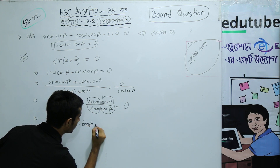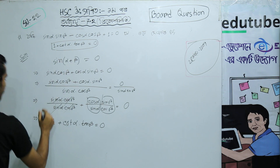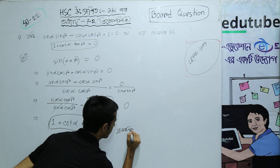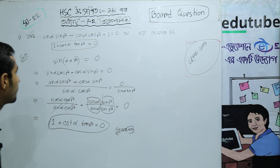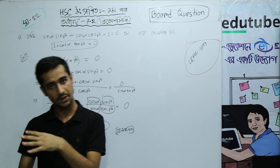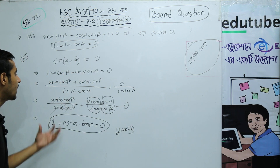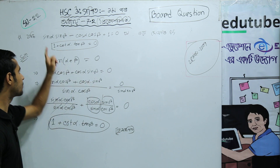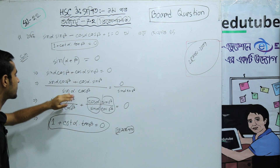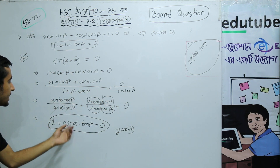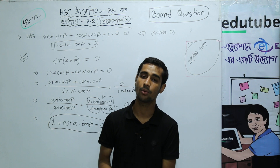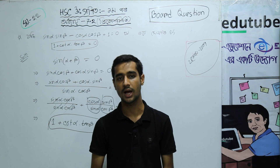Therefore 1 plus cot α·tan β equals 0, which is what we needed to prove. I will see you in the next video.